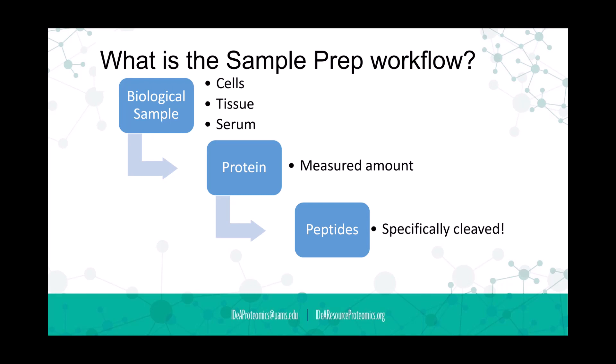There are three parts to the workflow. First, the sample prep workflow: we take biological samples — cell culture, tissue, serum — extract the proteins, and measure them so each sample starts with the same amount of protein. Then we use biochemistry, specifically the enzyme trypsin, which cleaves proteins into peptides in a very reproducible way.